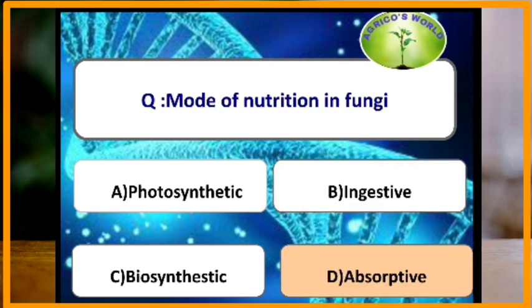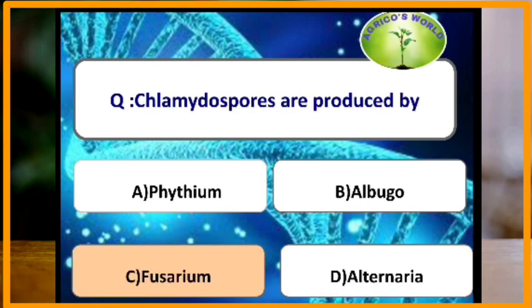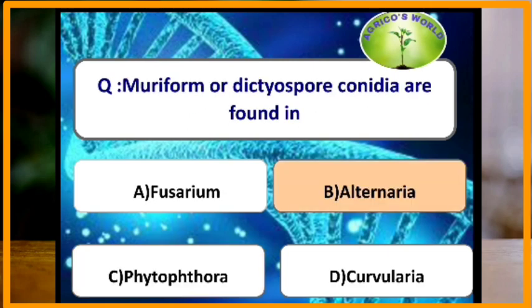The mode of nutrition in fungi is absorptive mode. Chlamydospores are produced by Fusarium, which also produces micro- and macroconidia.